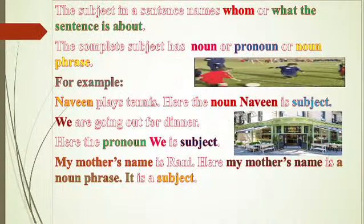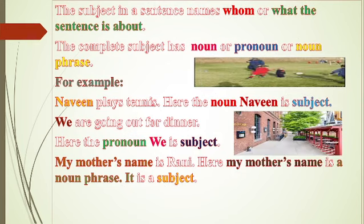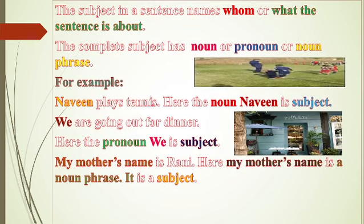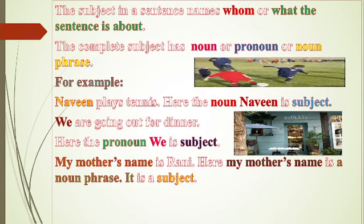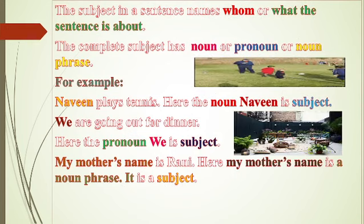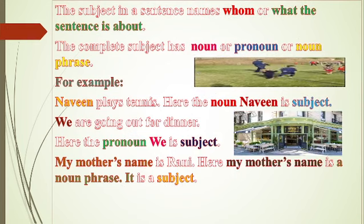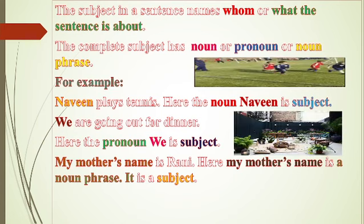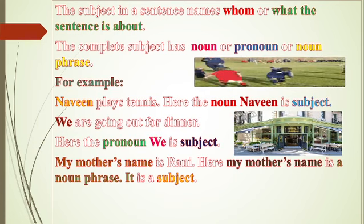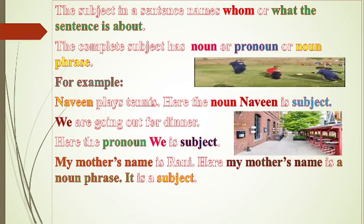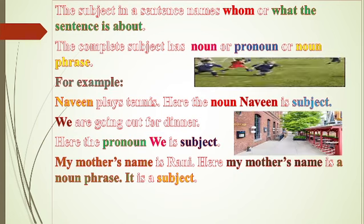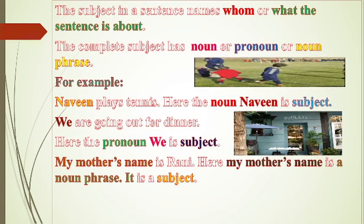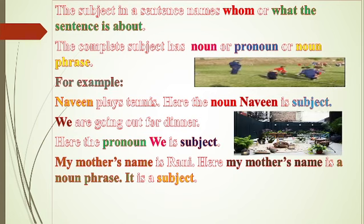The subject in a sentence names whom or what the sentence is about. In the subject part there will be a discussion — some names will be there. Who will tell us about the sentence? Here we can talk about subject. In the subject, there can be a noun or a pronoun or a noun phrase.